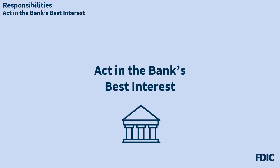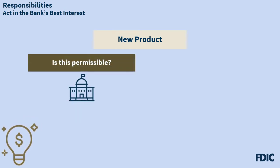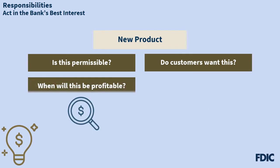Let's say that your bank is interested in offering a new product. Before this new product moves from an idea to a profitable venture, an effective board would ask several questions and hold discussions. Is this new product permissible under state or federal law? If not, then clearly the bank would not be able to move forward. If the product is permissible, a director might ask, is this something that our bank customers or potential customers want? The next question may be, would this product be profitable for the bank within a reasonable time?